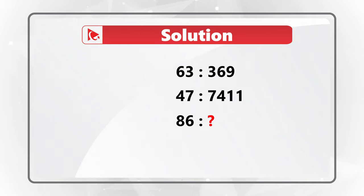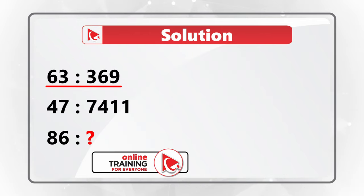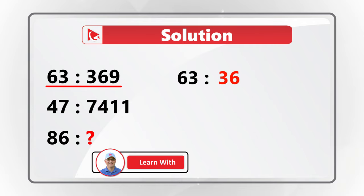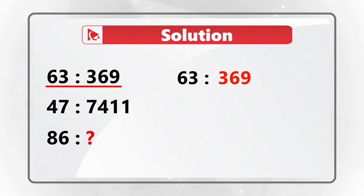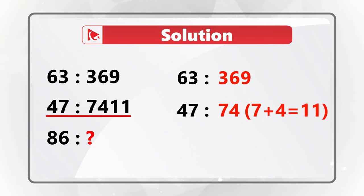So you need to reverse the digits and add together the digits to obtain the final digits. For example, 63 is related to 369: we swapped 3 and 6, making 3 the first digit and 6 the second digit, and then added 3 plus 6, which equals 9. We came up with the second ratio in a similar way: 47 is related to 74, where we swapped the digits, concatenated with the sum of 7 and 4, which is 11.